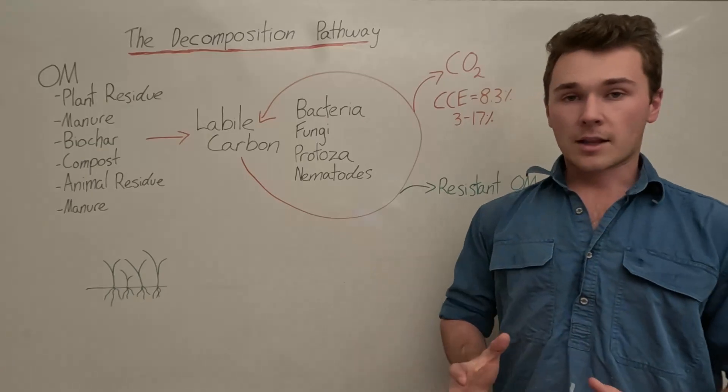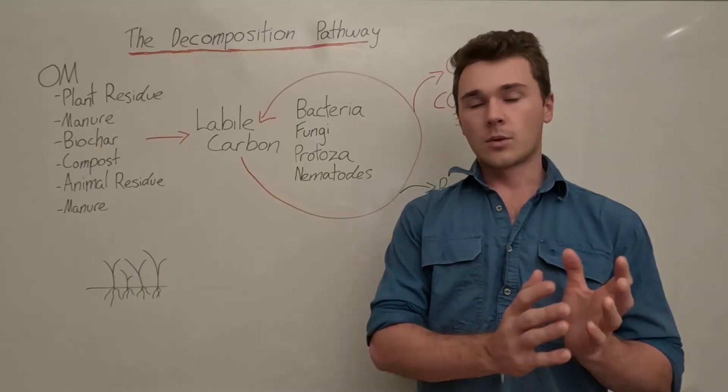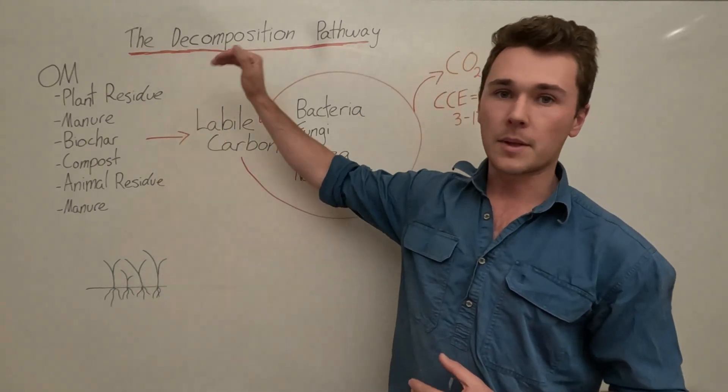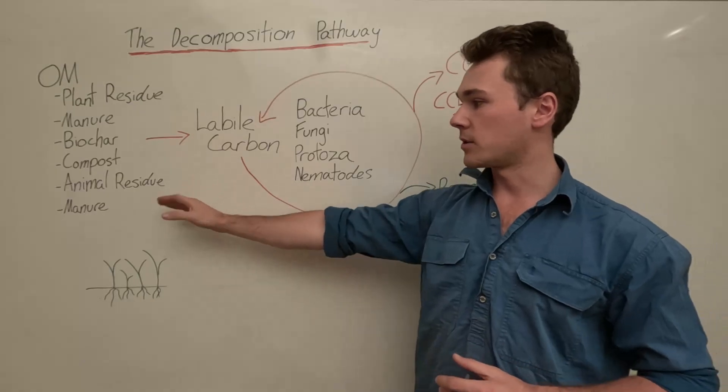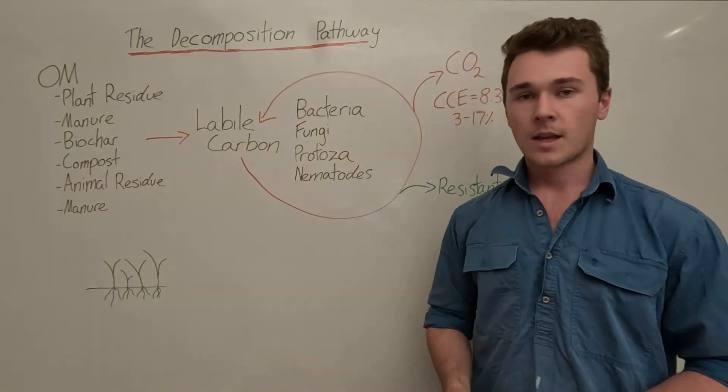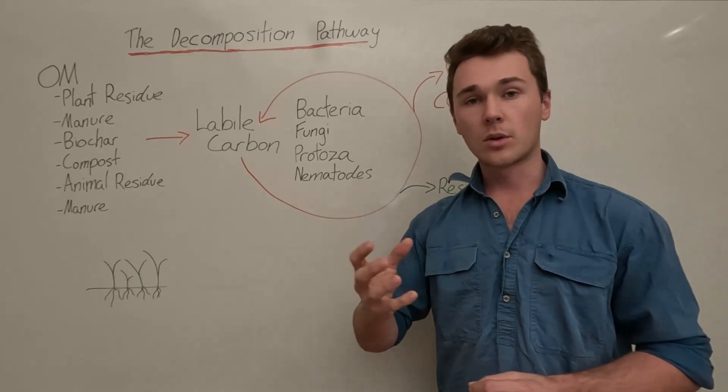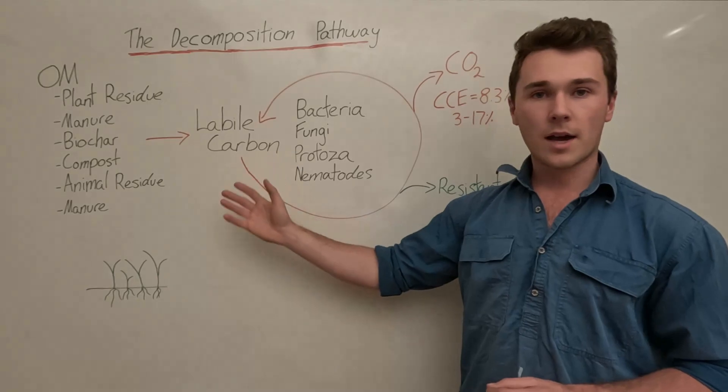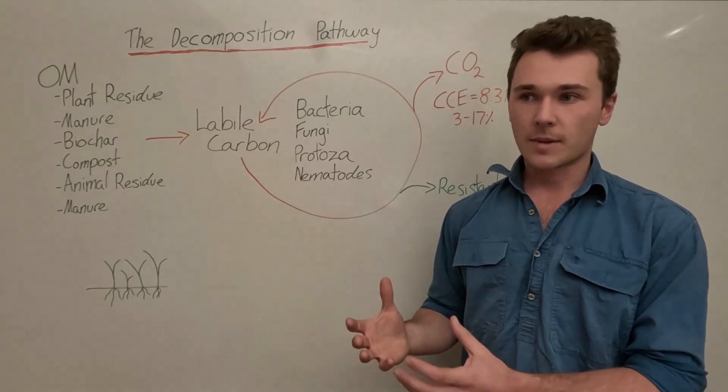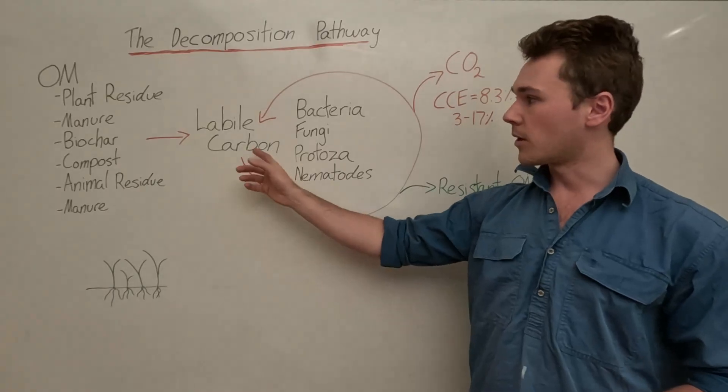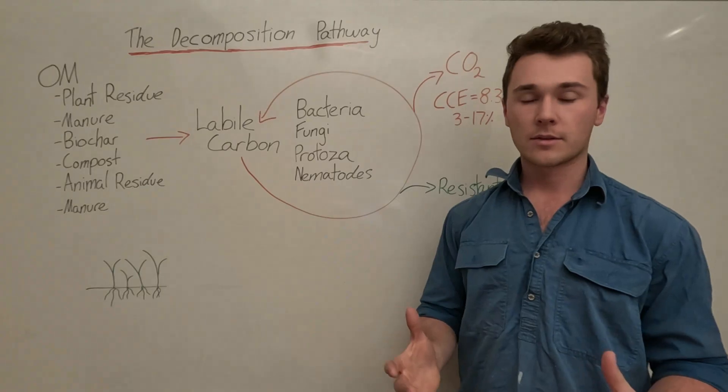The decomposition pathway is all about breaking down organic matter. We have our organic matter here. This can be anything from plant material, manure, biochar, compost, animal residue, anything that's really organic material. That breaks down into smaller, smaller pieces. Those smaller pieces are called labile carbon, which are active bits of carbon in our soil.